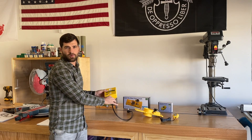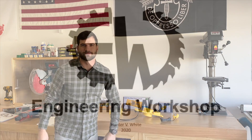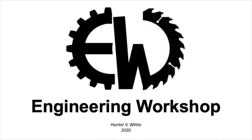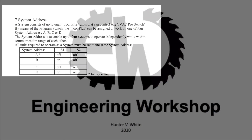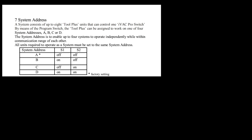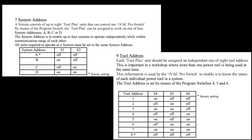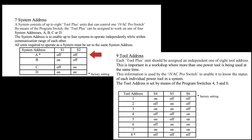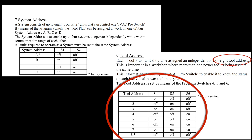So, let's get into how to program these components for your dust collection system. To program these components, you have to set the system address and the tool address. The system address delineates which dust collector you want to use. For one dust collector, use system A. You can add up to eight tools to system A, which are set by the tool addresses.